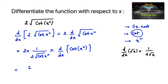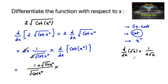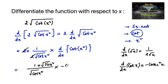We can cancel the 2s, giving us 1/√(cot(x²)). We can write √(cot(x²)) as √(cos(x²))/√(sin(x²)). Since d/dx of cot(x) is −cosec²(x), we write −cosec²(x²), and again by the chain rule we multiply by d/dx of x², which is 2x.